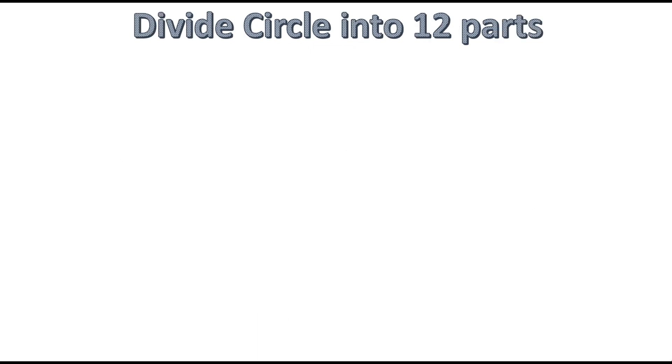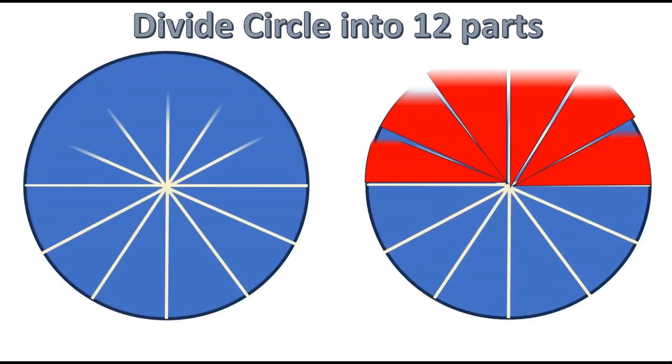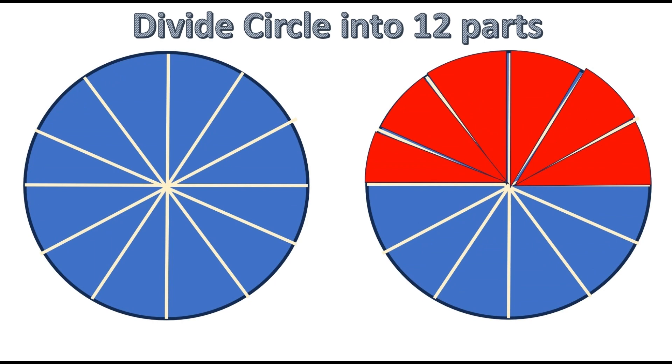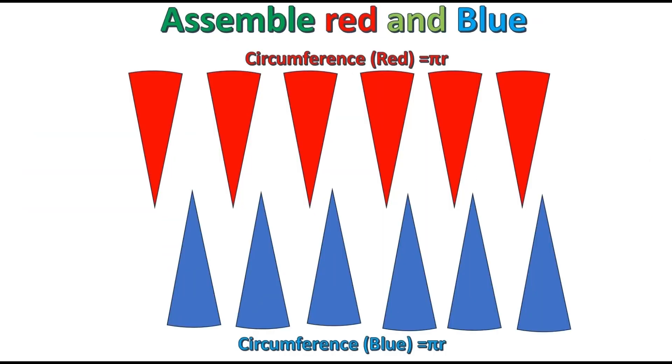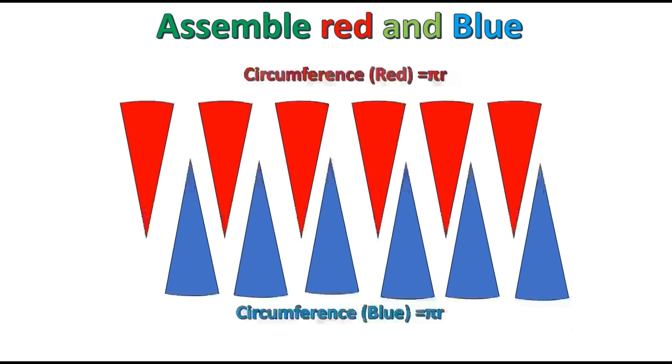Now let's look at 12 parts. We'll make 12 parts for the circle. Take the circle and make 12 parts. In a similar way, we'll take out all the parts, arrange them, and assemble the parts.